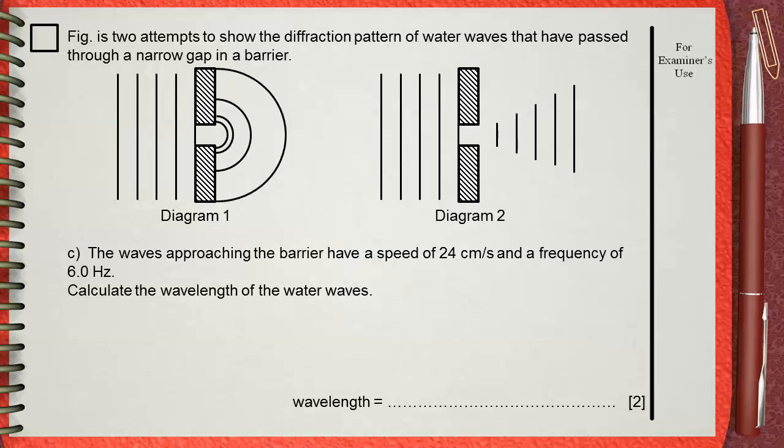Water waves obey the general wave equation: V equals lambda F. V is the wave speed. Lambda, this Latin letter, is the wavelength of the wave. F is the frequency.